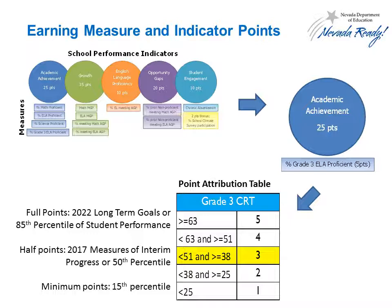Each measure has a point attribution table that outlines state performance expectations for that particular measure. For example, you can see how up to five possible points in the academic achievement indicator at the elementary school level can be obtained based upon the percentage of third graders that are proficient in the state's English Language Arts assessment.